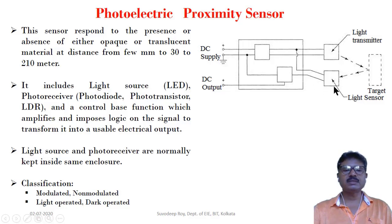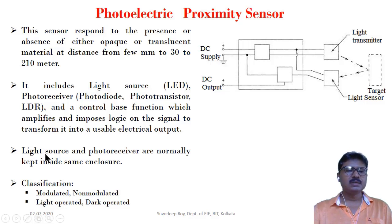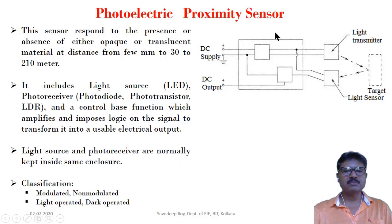Normally these detectors are photo diode, photo transistor, and LDR — light dependent resistors. Light sources and photo receivers are normally kept inside the same enclosure.